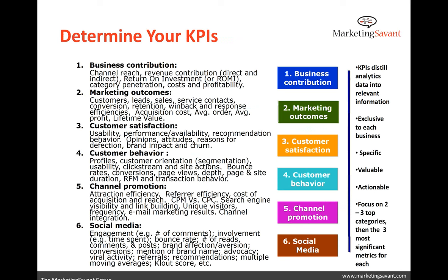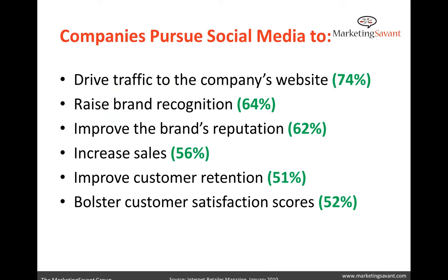Narrowing the road here on expectations, the action item that comes out of this first step is to step back and really list out what we expect social media to do for us. Driving traffic to the website is absolutely a realistic expectation of social. We see it in even the newest channels like Pinterest, where Pinterest drives more traffic to Better Homes and Gardens' website than Facebook and Twitter combined. That's a realistic expectation — no doubt.